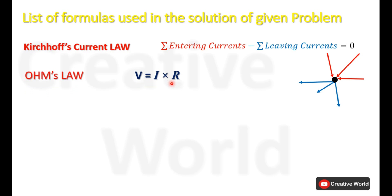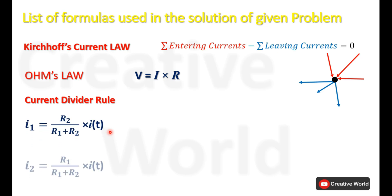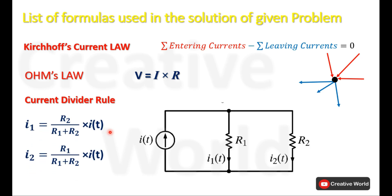We will also be using Ohm's Law. According to Ohm's Law, the voltage across any resistance R inside an electrical network is always equal to the product of the current through that resistance and the value of resistance. The current divider rule will also be utilized in this problem. The basic equations of currents I1 and I2 for this particular circuit using the current divider rule are provided here.